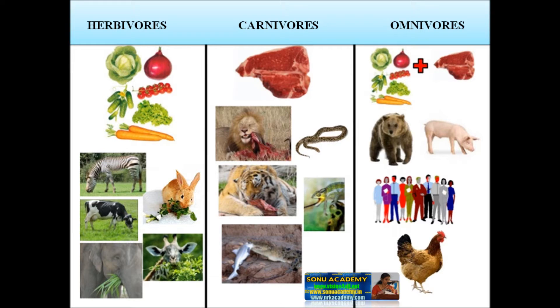Here we will discuss some examples of heterotrophic nutrition. They are herbivores, carnivores, and omnivores.